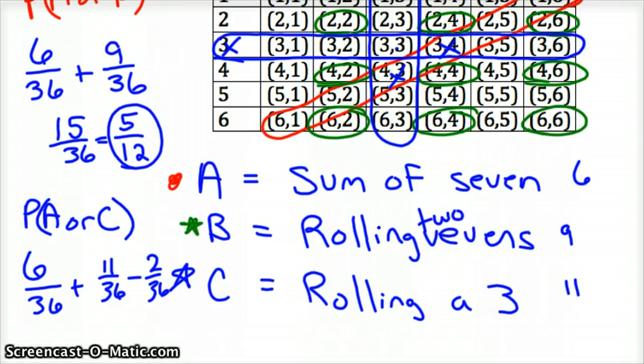Okay. And so this would add up to 15 over 36 which would reduce to, you can take out a three which would be five twelfths. So, hope this helps.